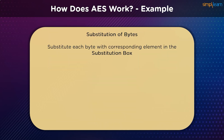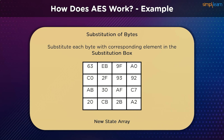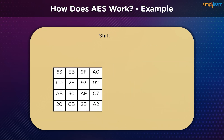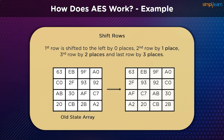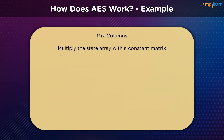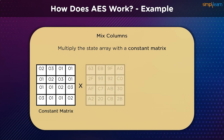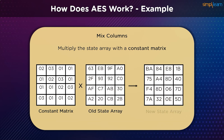In the substitution bytes process, we leverage an S-box to substitute each byte with a completely new byte. The resulting state array is passed as input to the row shifting process. In row shifting, each element is shifted to the left — first row by zero places, second row by one place, third row by two places, and the last row by three places. The state array from row shifting is then passed as input to mix columns, where we multiply the state array with a constant matrix to receive a new state array.